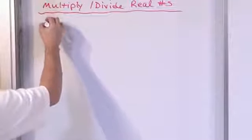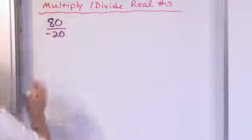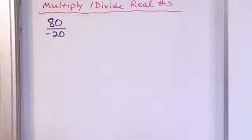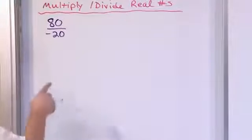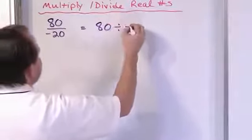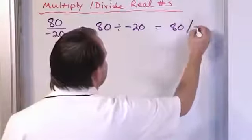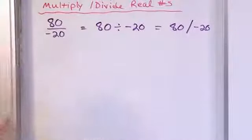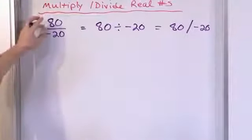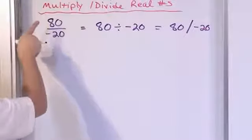Let's start with numbers. 80 divided by negative 20. You might say, isn't this a fraction? Yes, it is a fraction. But fractions are basically division. I could write this as 80 over negative 20, or 80 divided by negative 20, or with a slash — it's all the same thing. You're taking the top number and dividing by the bottom number. In this case, the bottom number is negative.